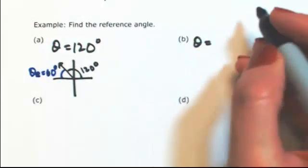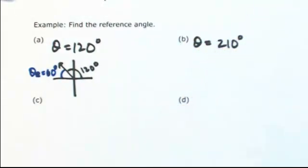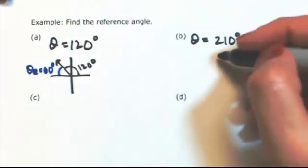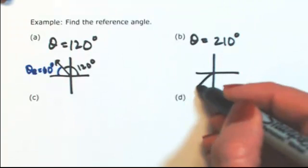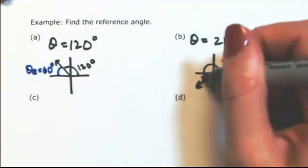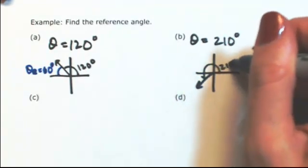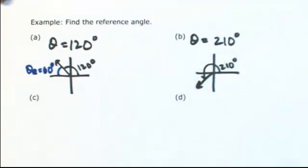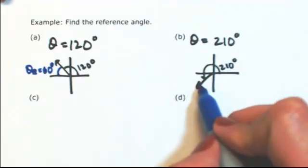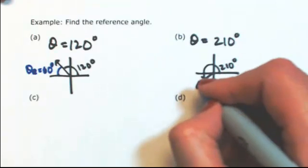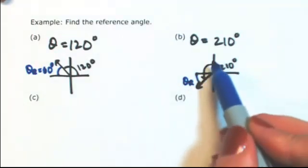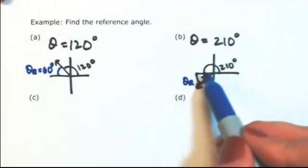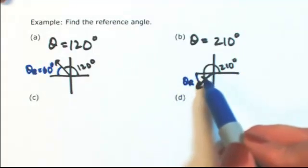Let's say theta is 210 degrees. Drawing a picture, 210 degrees would be in the third quadrant. To get back to the x-axis from the terminal side and stay less than 90 degrees, I need to go backwards. Half a revolution is 180, so to get to 210 that's 30 degrees. So theta r is 30 degrees.